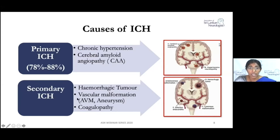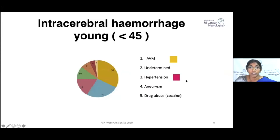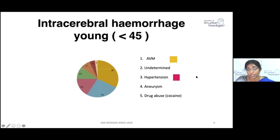Secondary hemorrhages can be due to hemorrhagic tumors, vascular malformations, or coagulopathies. In older adults, primary hypertensive bleeds are the major cause. In younger patients, under 45 years, secondary causes predominate — one study shows AV malformation as the first cause, followed by idiopathic cases, with hypertension as the third major cause.